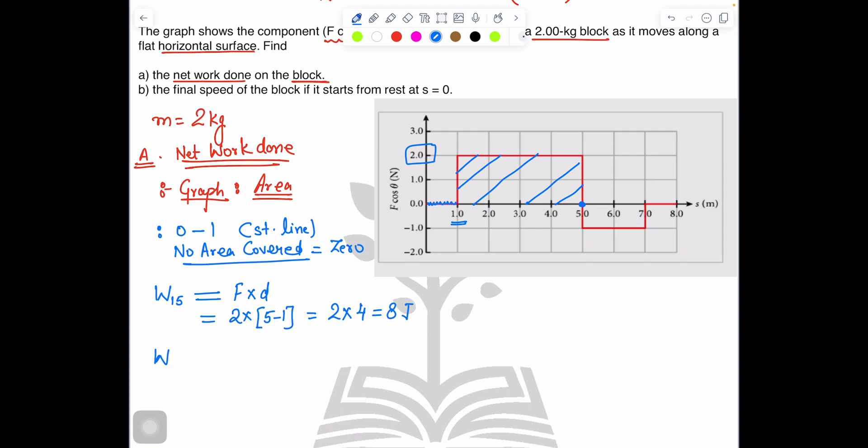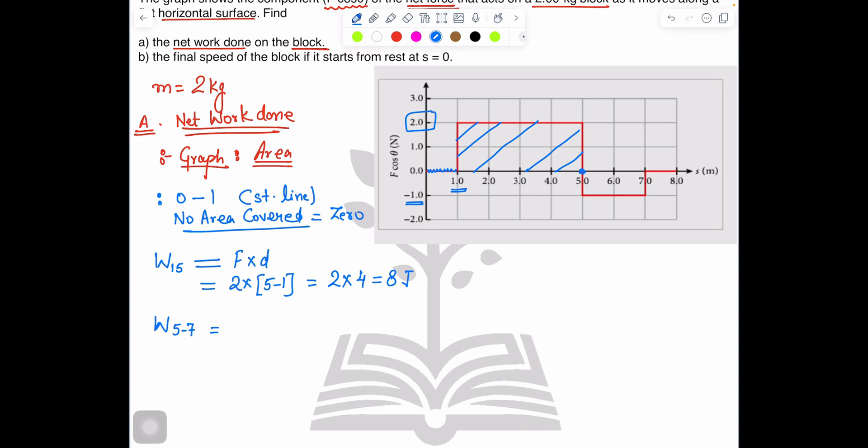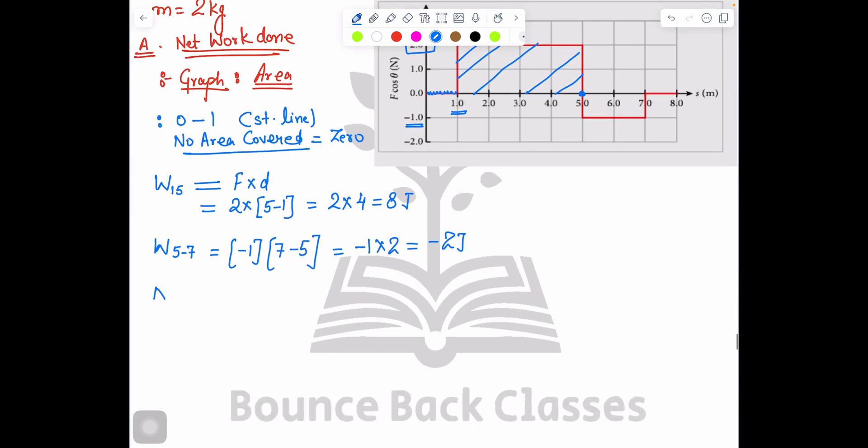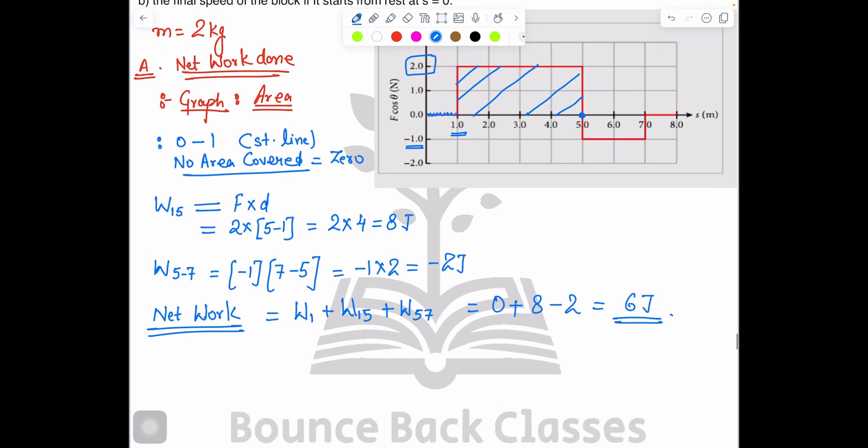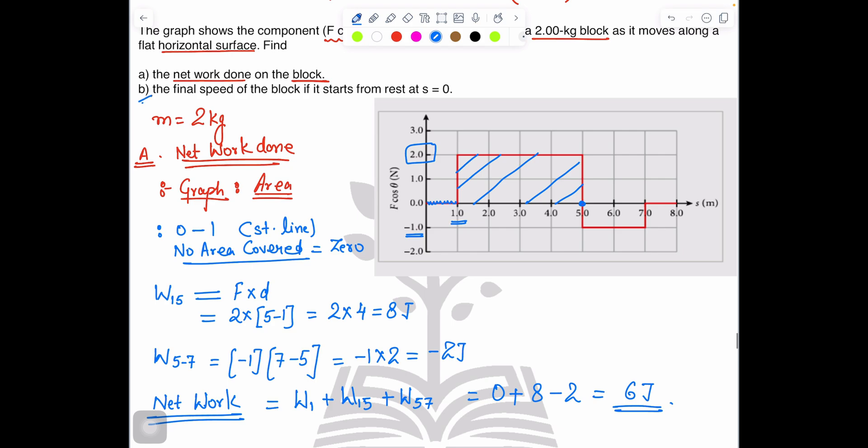Now move to the next part, work done 5 to 7. The force is negative 1. Negative 1 multiply the distance, which is 7 minus 5, so negative 1 times 2, which equals negative 2 joules. So what is the net work done? Work done 1 to 5 plus work done 5 to 7. Solve this: 0 plus 8 minus 2, which equals 6 joules.